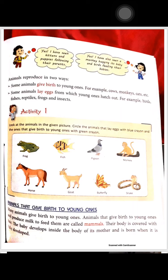Animals like cows, monkeys, cats and many others must reproduce their own kind. Some animals lay eggs from which young ones hatch out, and many animals give birth to young ones. For example, birds, fishes, reptiles, frogs and insects lay eggs, while mammals give birth.